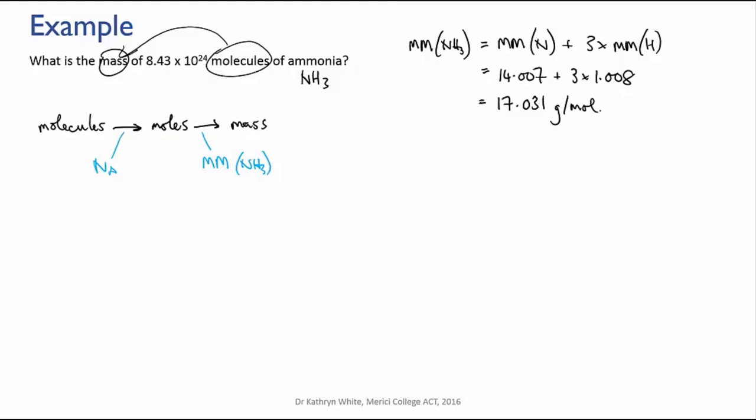I now have both of my conversion factors so I can go ahead and do this calculation. First of all, I write down what I know. That's the number of molecules of ammonia. Next, I write down the conversion factor that's going to get me from molecules to moles. It's 6.022 times 10 to the 23 molecules per mole. Now I can cancel out the molecules and I have moles.